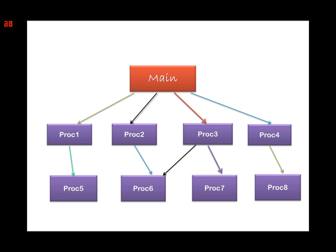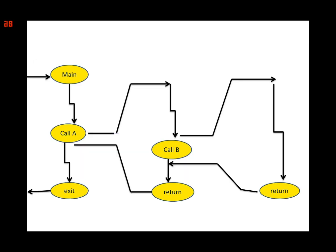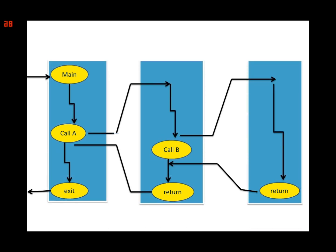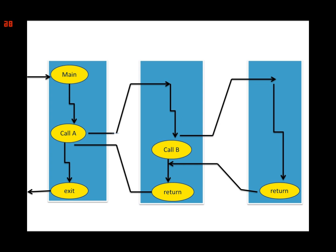This is an extension of the procedural model in which we have two computers having distributed programs and procedure calls. These can be extended from one computer to another by using RPC. In this figure, the main program of computer 1 accesses procedure 4 of computer 2 through RPC. A single thread of control begins in the main program, passes through procedure A and B, and eventually returns to the main program.